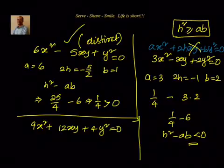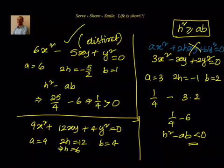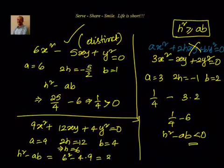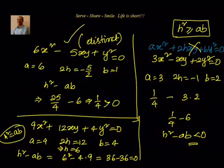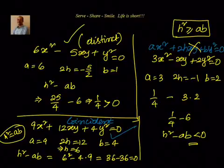For the last equation: A = 9, 2H = 12 so H = 6, and B = 4. H² − AB = 6² − 4 × 9 = 36 − 36 = 0. So H² = AB, which means this represents two coincident lines.